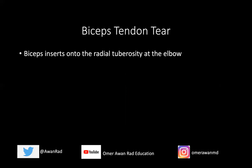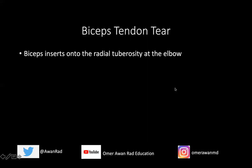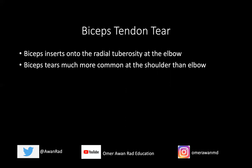This is something we see on MRI of the elbows from time to time. Remember that the biceps inserts onto the radial tuberosity at the elbow. The brachialis — this muscle here — has a tendon that inserts onto the ulnar tuberosity, whereas the biceps brachii inserts onto the radial tuberosity. That's important to keep in mind. Biceps tears are actually much more common at the shoulder than the elbow, but this is an elbow case.